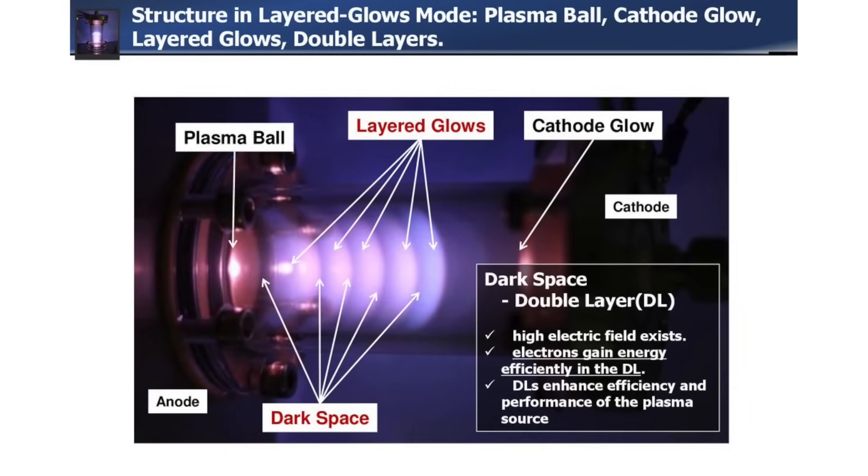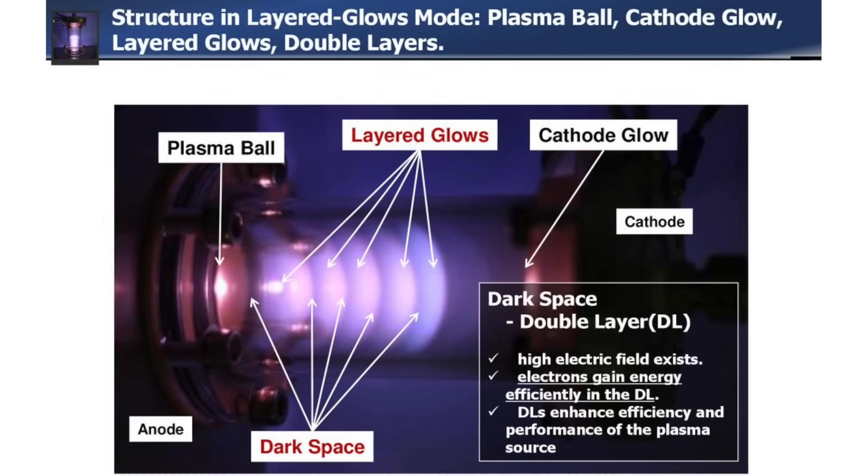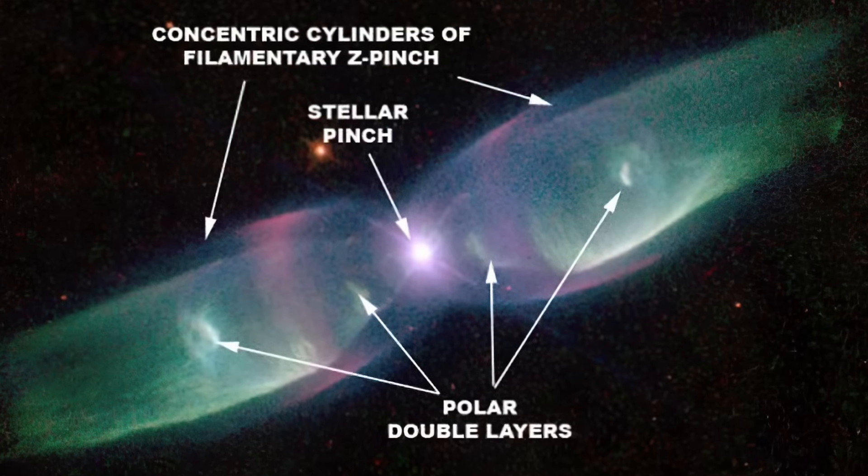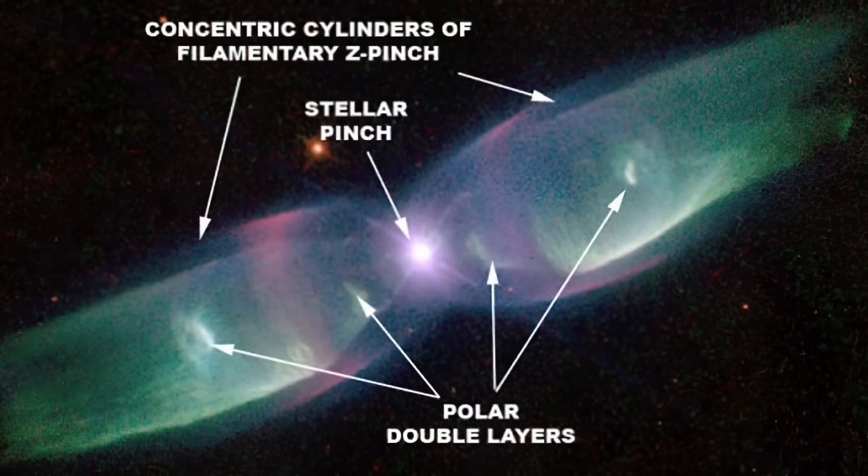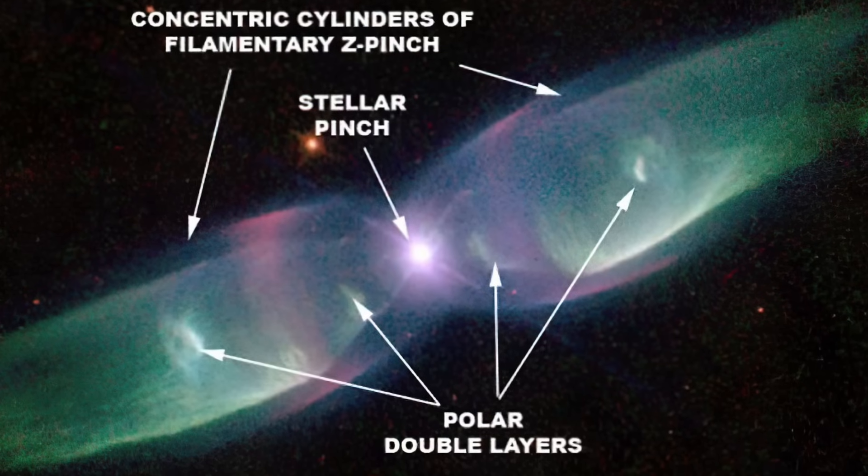Double layers separate plasma into cells and filaments that have different qualities, different temperatures or densities or compositions. These cellular and filamentary structures show up especially in planetary nebulae, but they can be invisible in optical wavelengths and appear in x-ray or radio observations.